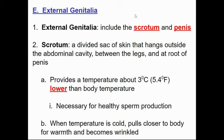Moving to the external genitalia — the scrotum and the penis. The scrotum is the divided sac of skin that houses the testes. One of its functions is to lower body temperature: optimal sperm production is about three degrees Celsius below normal body temperature, so positioning the testes away from the body reduces temperature. If it gets cold, the cremaster muscle contracts, pulling the testes closer to the body's core to maintain optimal temperature for sperm production.